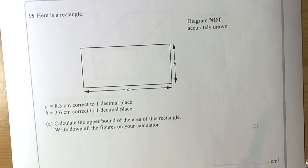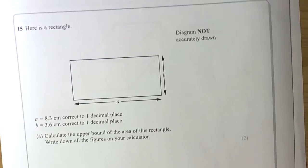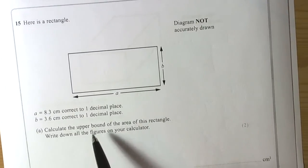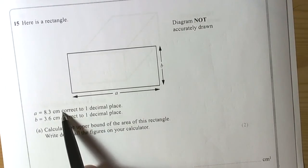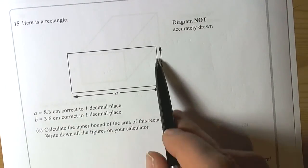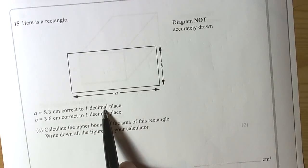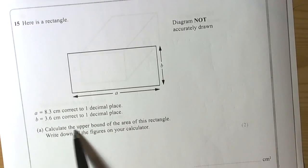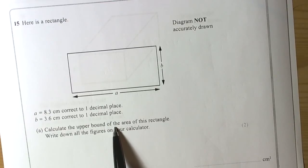The question is shouting out it's about lower bounds and upper bounds. How do we know that? Well, we can see that they've given us some values for the lengths of lines correct to given accuracies. The question also then says calculate upper bounds. That's another big clue that this is about upper bounds and lower bounds.